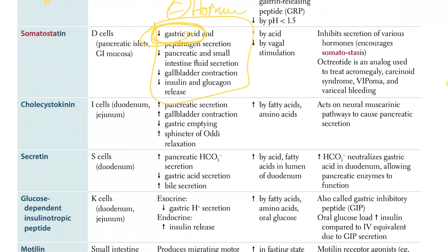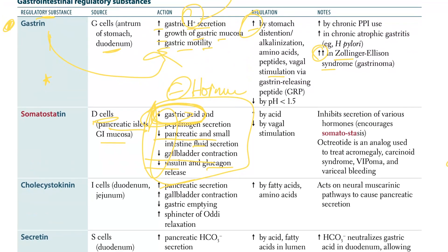Moving on to somatostatin: it comes from the D cells in the pancreatic islets and GI mucosa. It decreases gastric acid, decreases pancreatic and small intestine fluid secretion, decreases gallbladder contraction, and decreases insulin and glucagon release - basically decreasing all the things. It is increased by acid, so more somatostatin comes in an acidic environment.